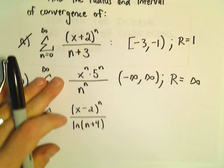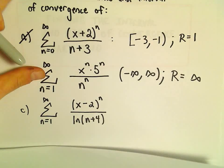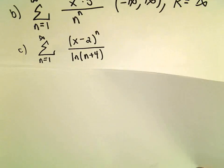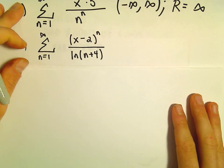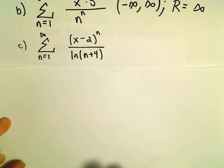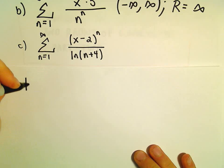Alright, so one more example of finding the radius and interval of convergence. Here we're going to look at the series from 1 to infinity of x minus 2 raised to the n over the natural logarithm of n plus 4.